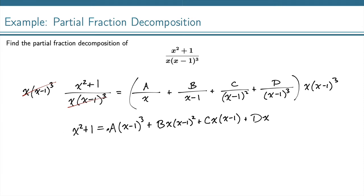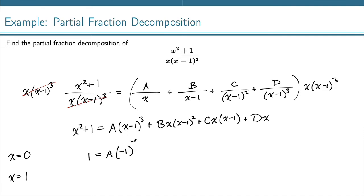Now to solve for our constants A, B, C, and D. An easy thing we can do is always plug in zeros of the original denominator — so that's x equals 0 and x equals 1. If you plug in x equals 0, you just get 1 on the left side. And every term on the right side that has a factor of x — when you plug 0 into those, you just get 0 for the whole thing. So we're just left with A times 0 minus 1 cubed, which gives us 1 equals negative A. In other words, A is equal to negative 1.